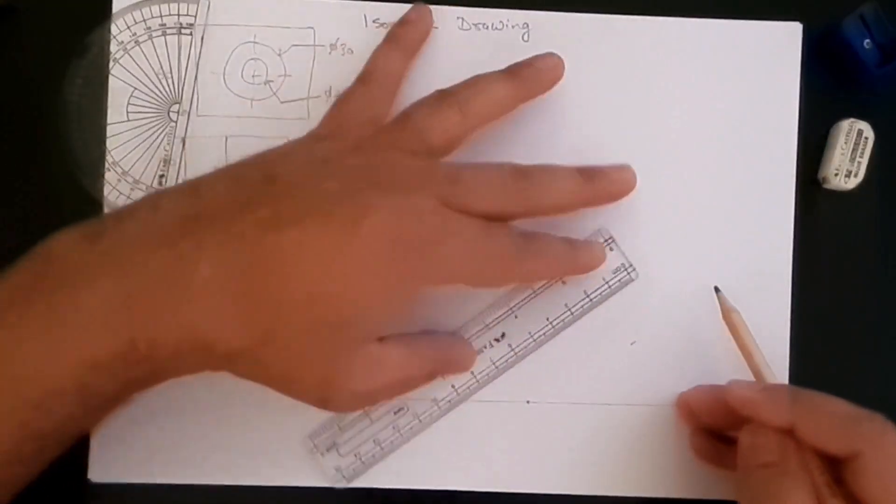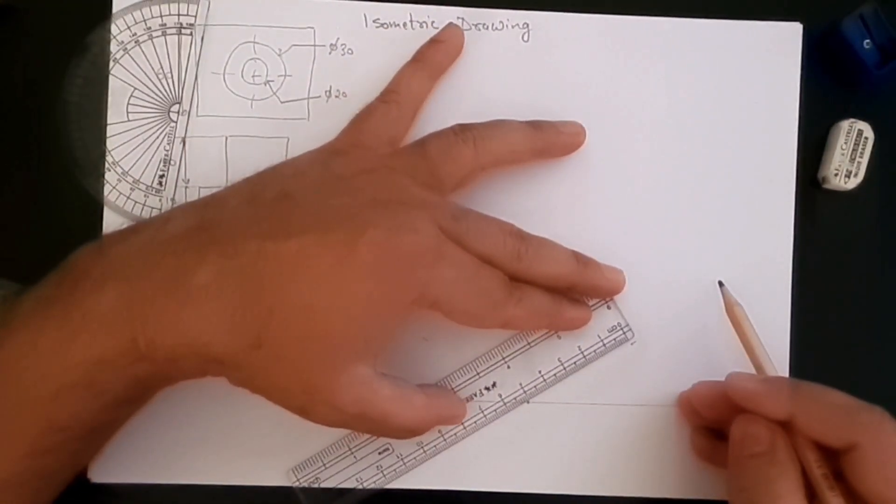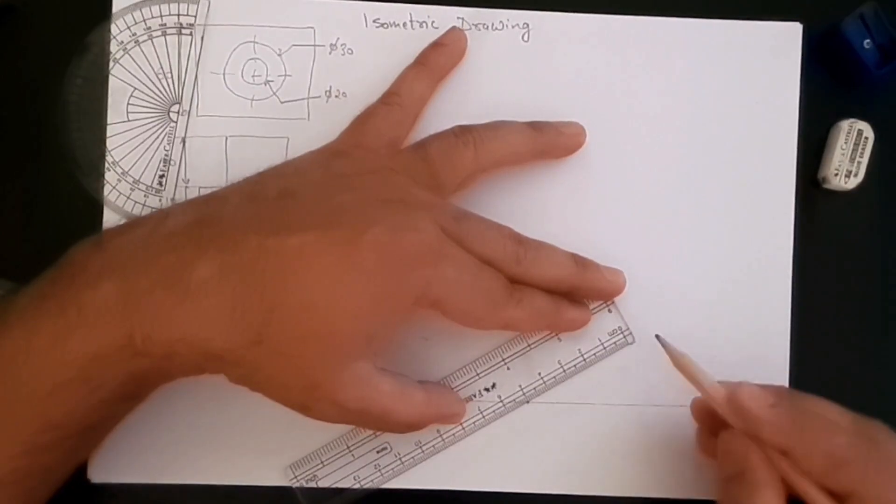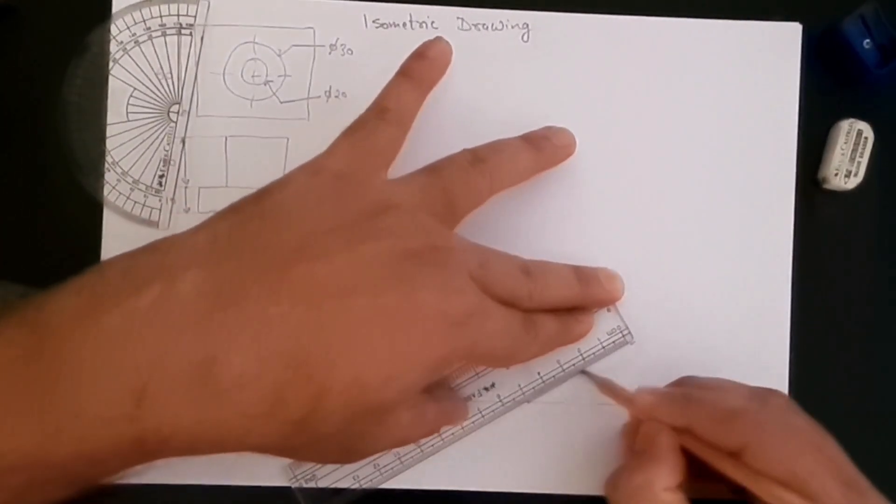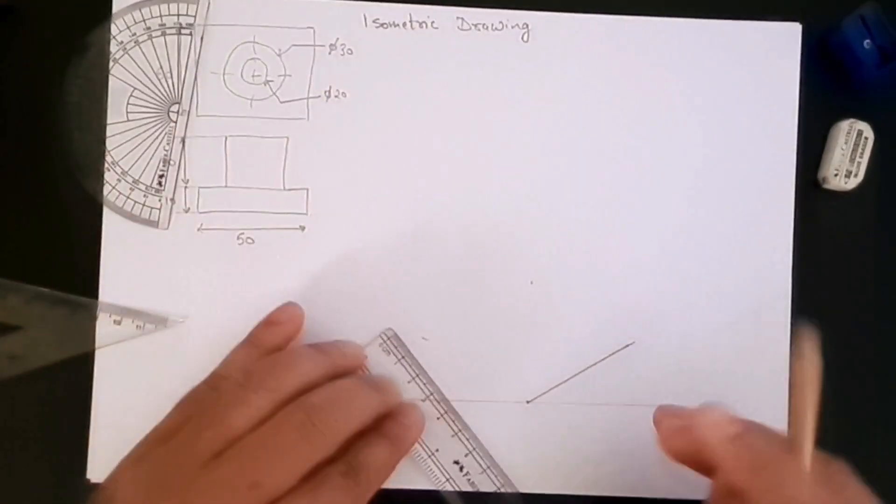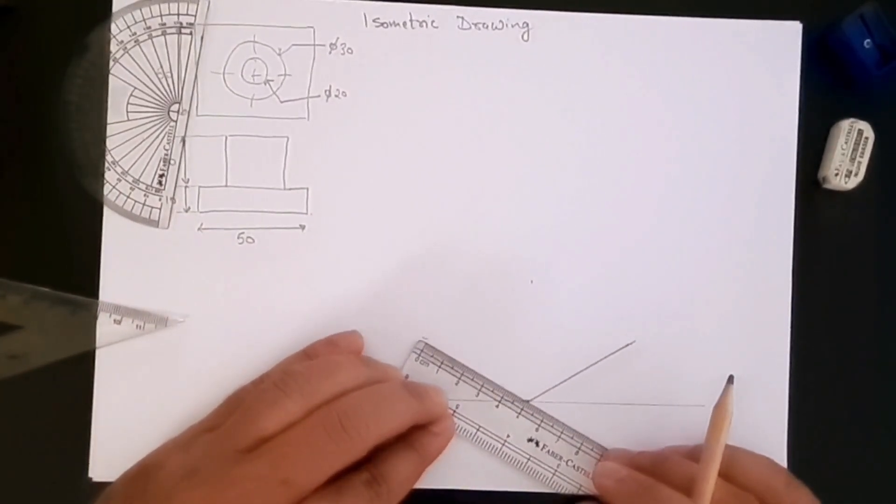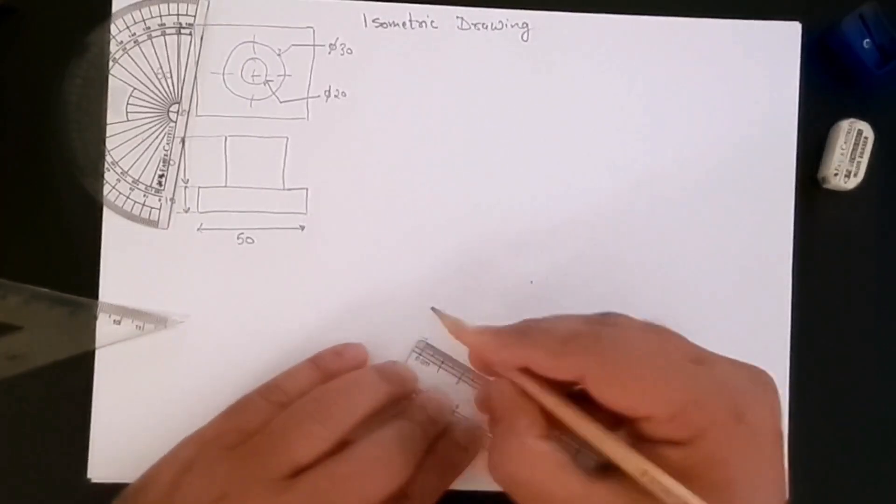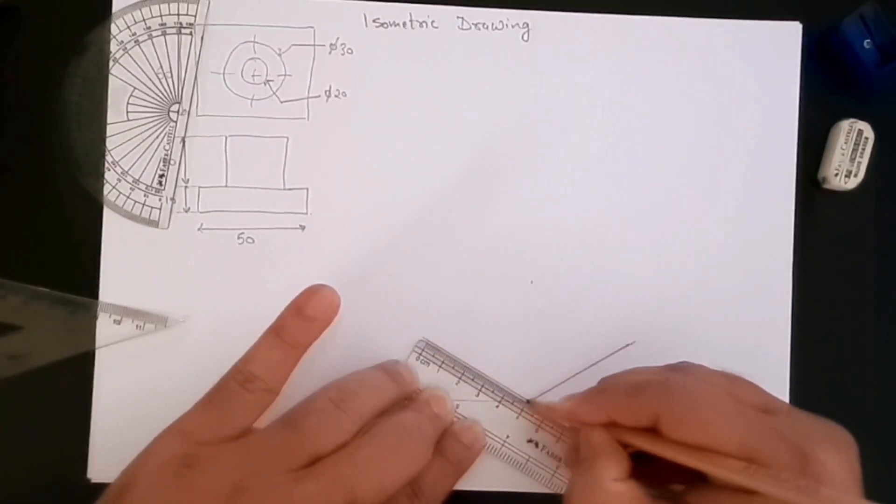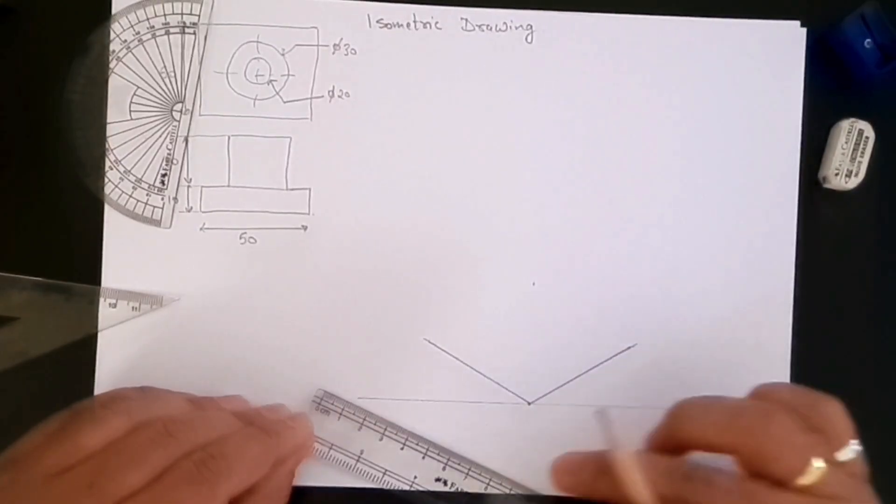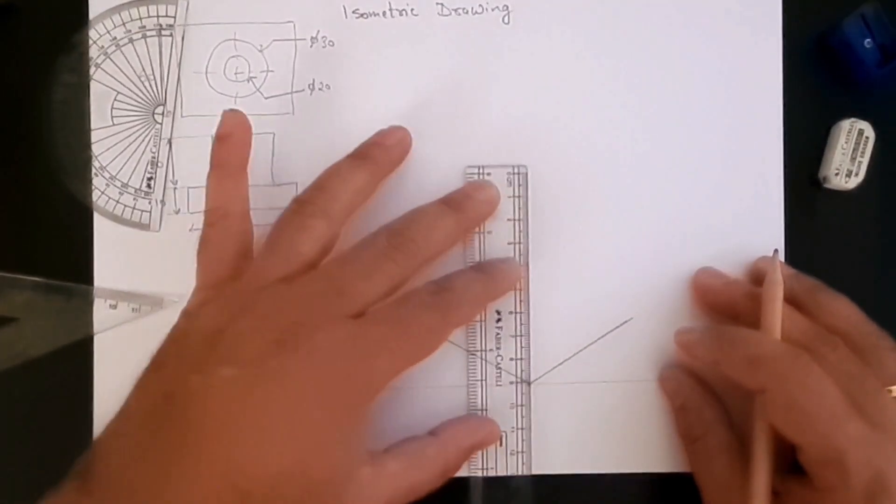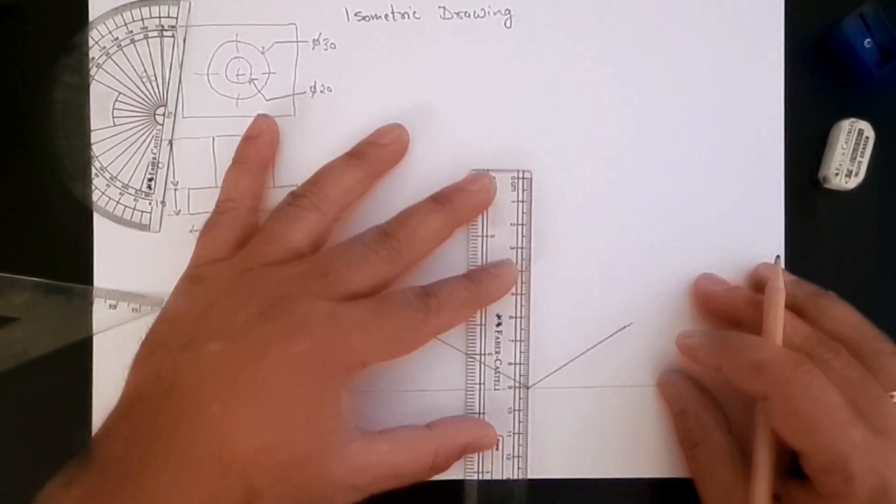So that's the 30 degree angle, that's 90, and that is 30 as well. Once when they are created, let's create our base of 50 millimeters. So first of all, let's create this which is 50 millimeters from here. This is 50 millimeters from here.